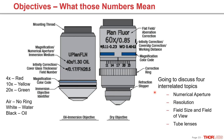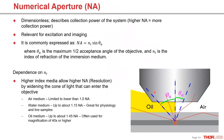We're going to discuss four interrelated topics: numerical aperture, resolution, field size and field of view, and tube lenses. Numerical aperture is a dimensionless value describing the collection power of the microscope or system, relevant for both excitation and imaging. It's commonly expressed as NA = n·sin(θ), where n is the index of refraction of the imaging medium and θ is the collection half angle.